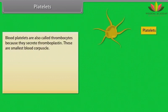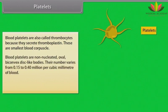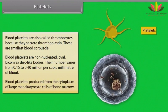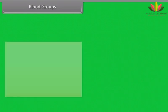Platelets, also called thrombocytes, secrete thromboplastin. They are the smallest blood corpuscle — non-nucleated, oval, biconcave disc-like bodies. Their number varies from 0.15 to 0.40 million per cubic millimeter of blood. Blood platelets are produced from the cytoplasm of large megakaryocyte cells of the bone marrow.